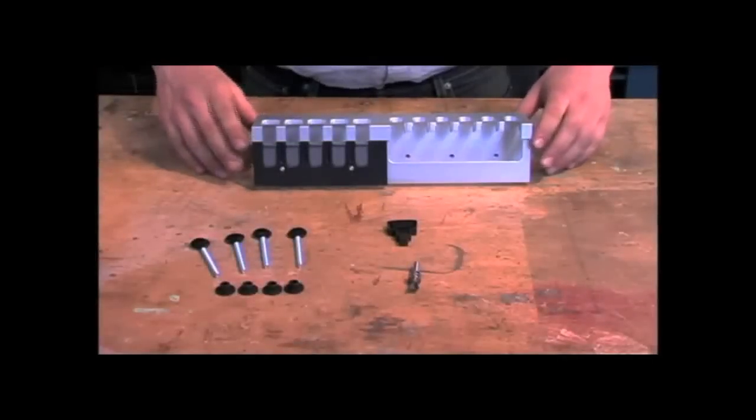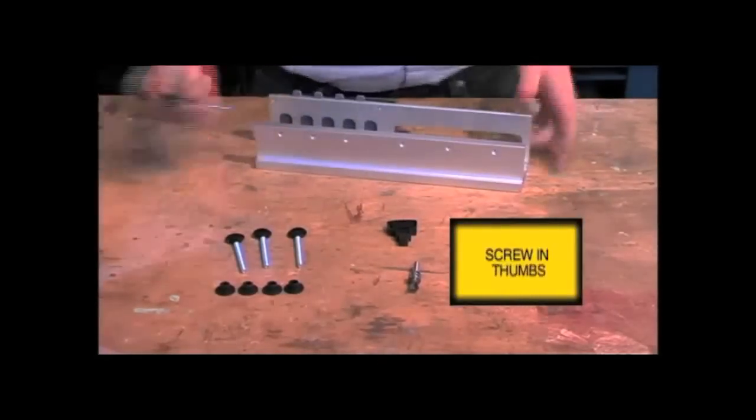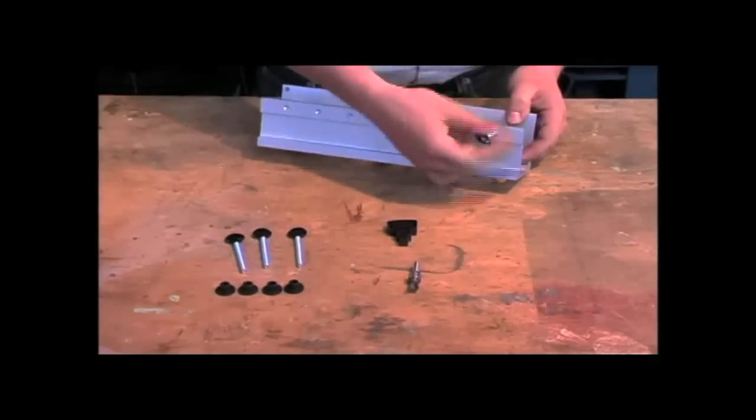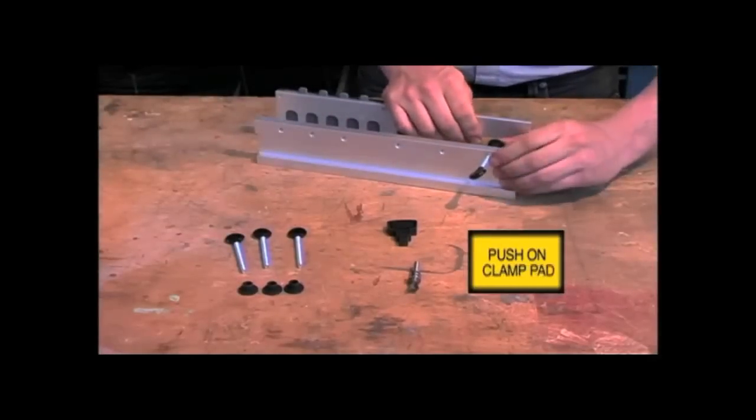The only assembly required on the jig is to install the four clamping thumbscrews. After it's screwed in, push on the clamp pad.